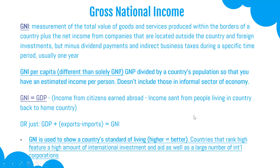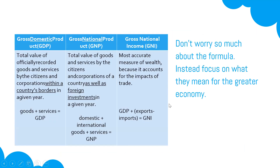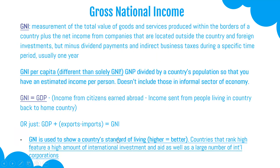Understanding GNI and GNI per capita is key because it shows us a country's standard of living. The higher the GNI per capita, the better the living standard; the lower it is, the lower the standard of living. Countries that rank high feature a high amount of international investment and aid, as well as a large number of international corporations. Here's a table comparing GDP, GNP, and GNI — don't worry so much about the formulas; leave that to the economists. Instead, focus on what they mean for the greater economy, such as GNI showing us a country's standard of living.